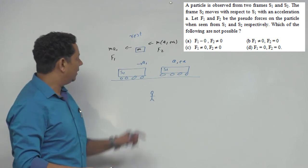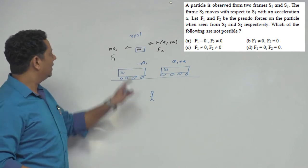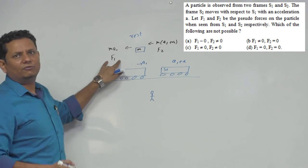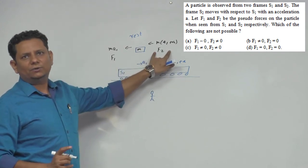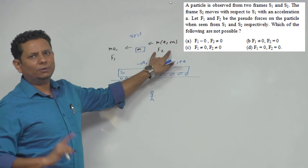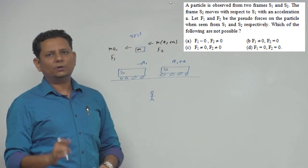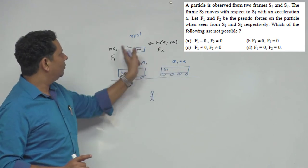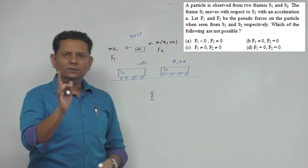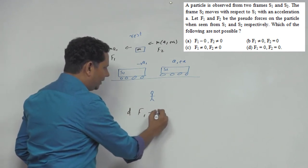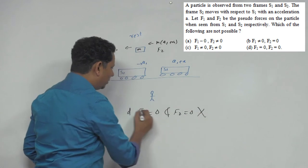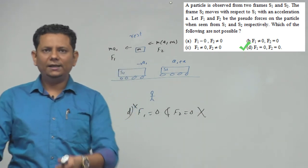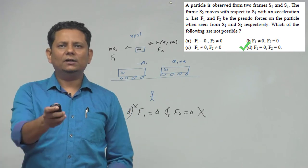Now considering various scenarios: if a1=0, meaning S1 is at rest, then f1=0. But f2 = m·a ≠ 0 since a≠0. So one of them being zero is possible, but both being zero simultaneously is not possible, because at least one will have a non-zero value. Therefore option D, where f1=0 and f2=0, is not a possibility — making option D the correct choice.